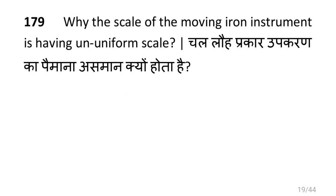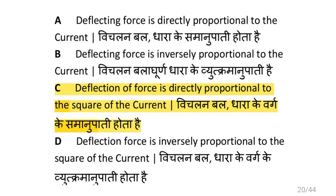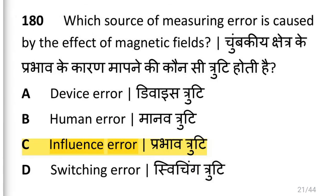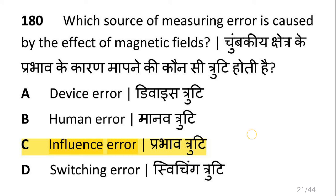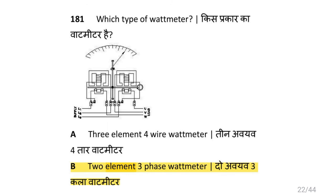Why does the moving iron instrument have a non-uniform scale? Because the deflecting force is directly proportional to the square of the current. Which source of measuring error is caused by the effect of a magnetic field? That is influence error.